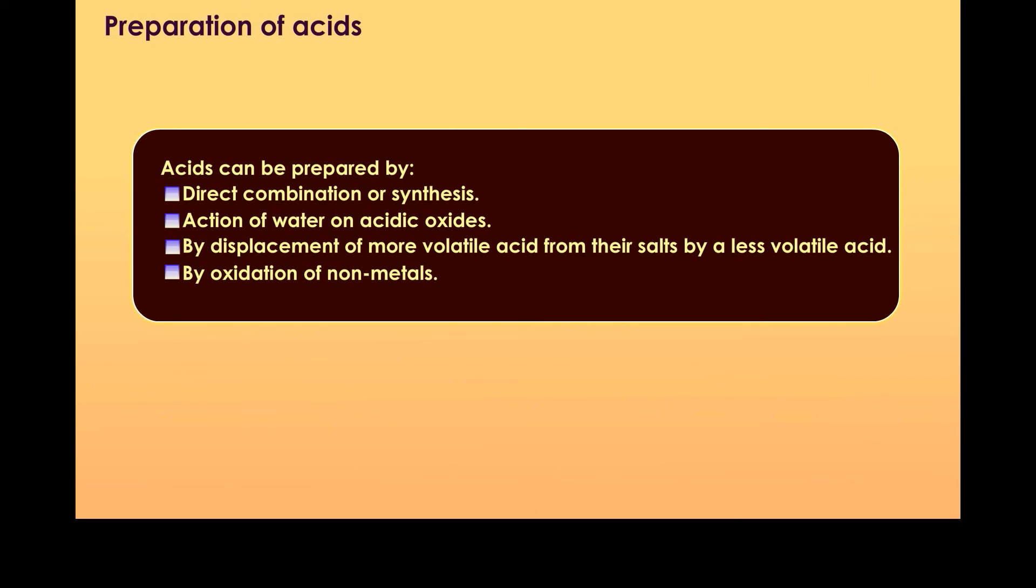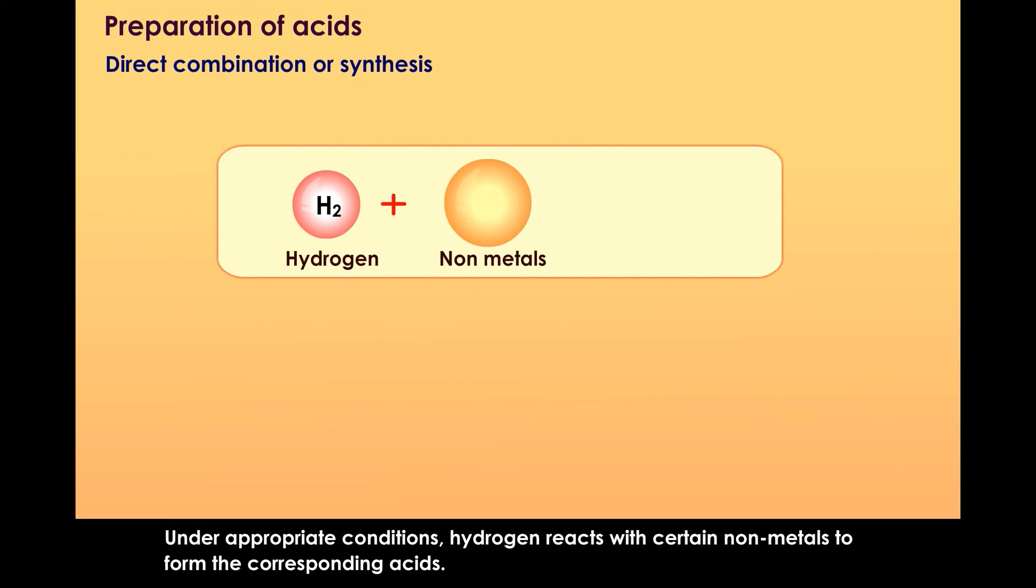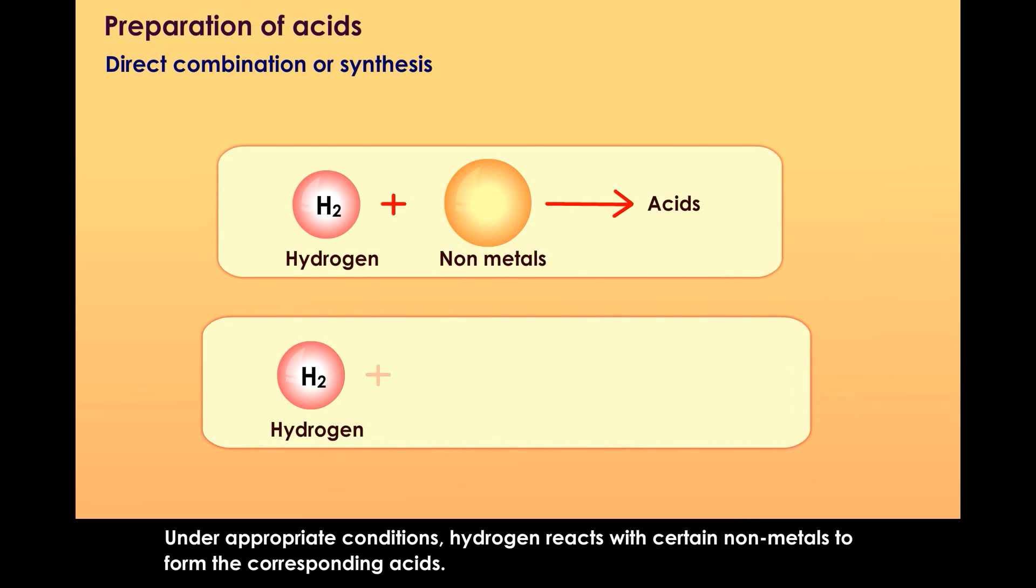Direct combination or synthesis. Under appropriate conditions, hydrogen reacts with certain non-metals to form the corresponding acids. Hydrogen plus non-metal gives acid. For example, hydrogen and chlorine give hydrochloric acid.